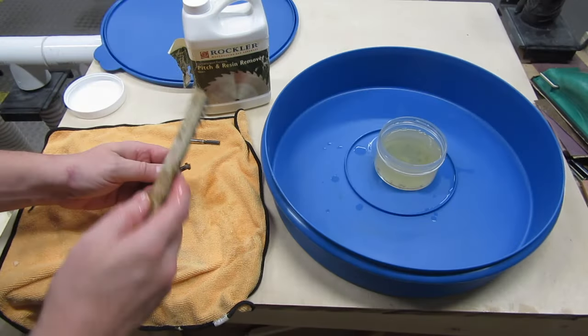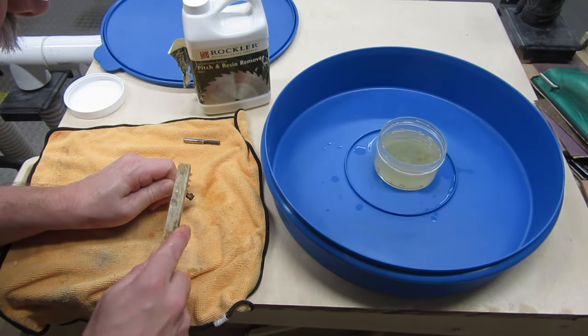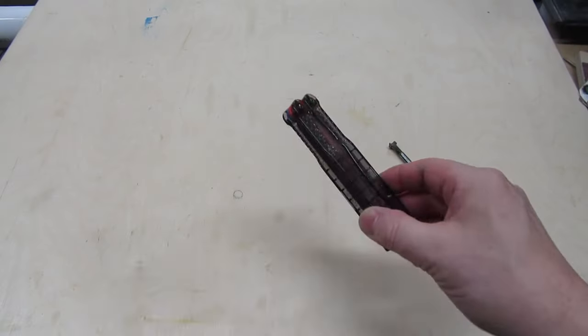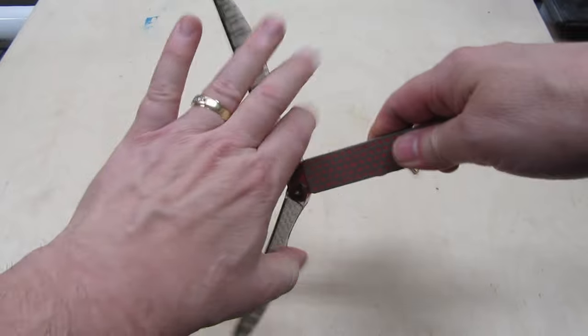So after the bit cooled down, I cleaned it, both the cutting edges and the shank, using some Rockler pitch and resin remover. Then I resharpened it with this diamond sharpening hone I got at Home Depot.